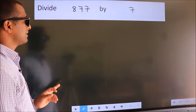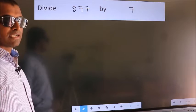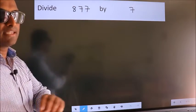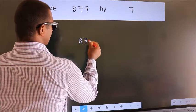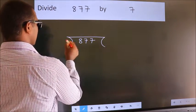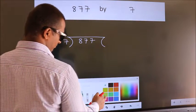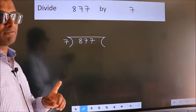Divide 877 by 7. To do this division, we should frame it in this way: 877 here, 7 here. This is your step 1.